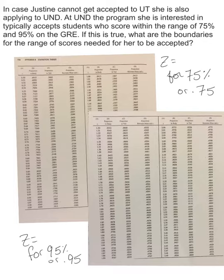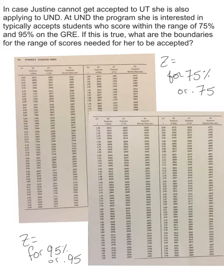In case Justine can't get into UT, she's also interested in UND. That program typically accepts students scoring within the 75th to 95th percentile on the GRE. These are percentile ranks, and we need to find the boundary scores for that range — the lower limit and the upper limit.